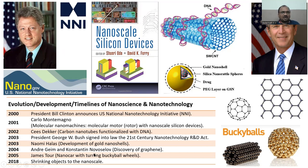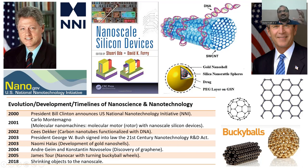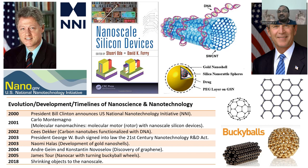Next is Novoselov's discovery of graphene — this is called graphene. Next is buckyballs — these are the buckyballs, also one of the important things. Next is nano power with the turning buckyball wheels. Next is shrinking objects to the nano scale objectives — making things shrink up to the nano scale. All these events — there are still a number of events; I have taken only the important ones.